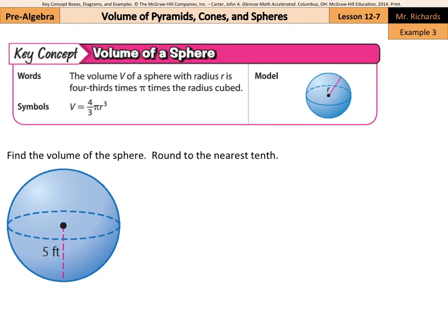In our third example, we have the volume of a sphere. The volume V of a sphere with radius r is four-thirds times pi times the radius cubed. And so V equals four-thirds pi r cubed is our formula. And that's what we'll start with in this example.